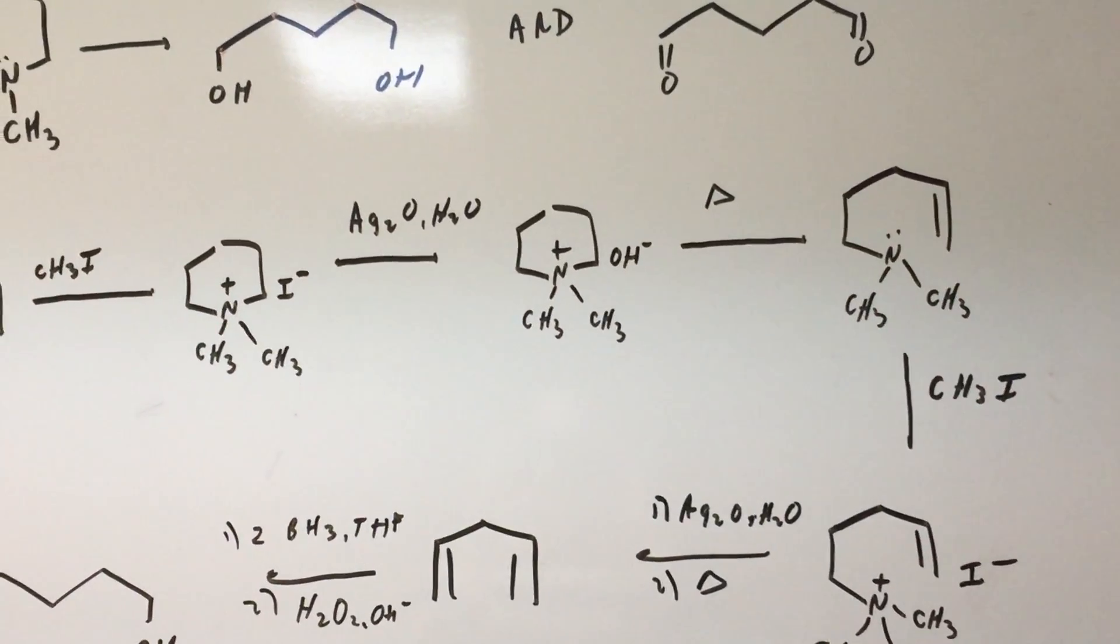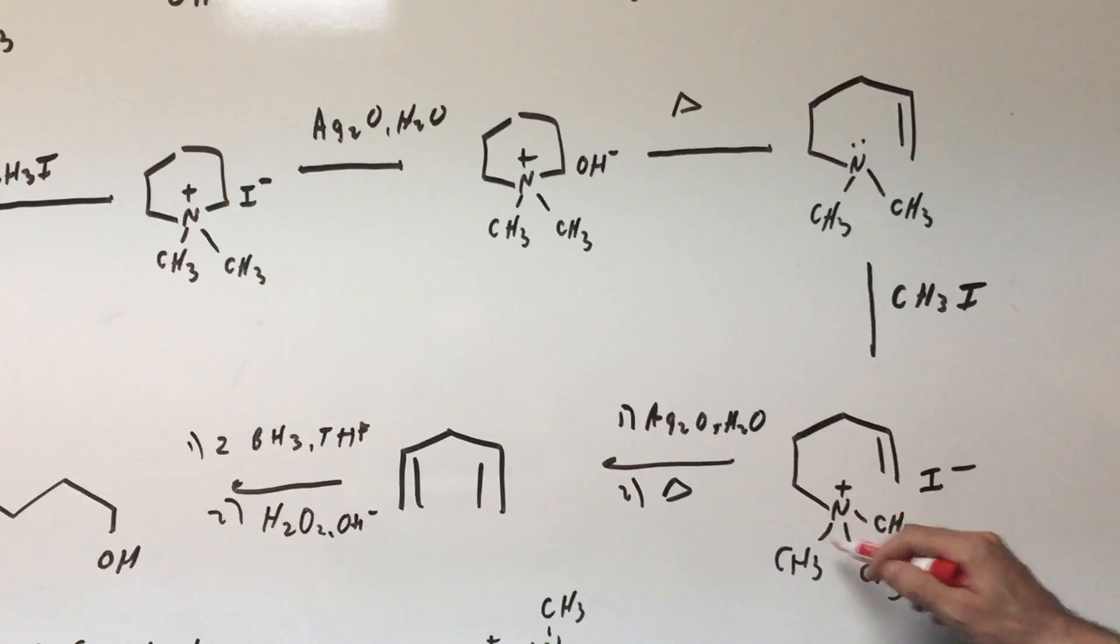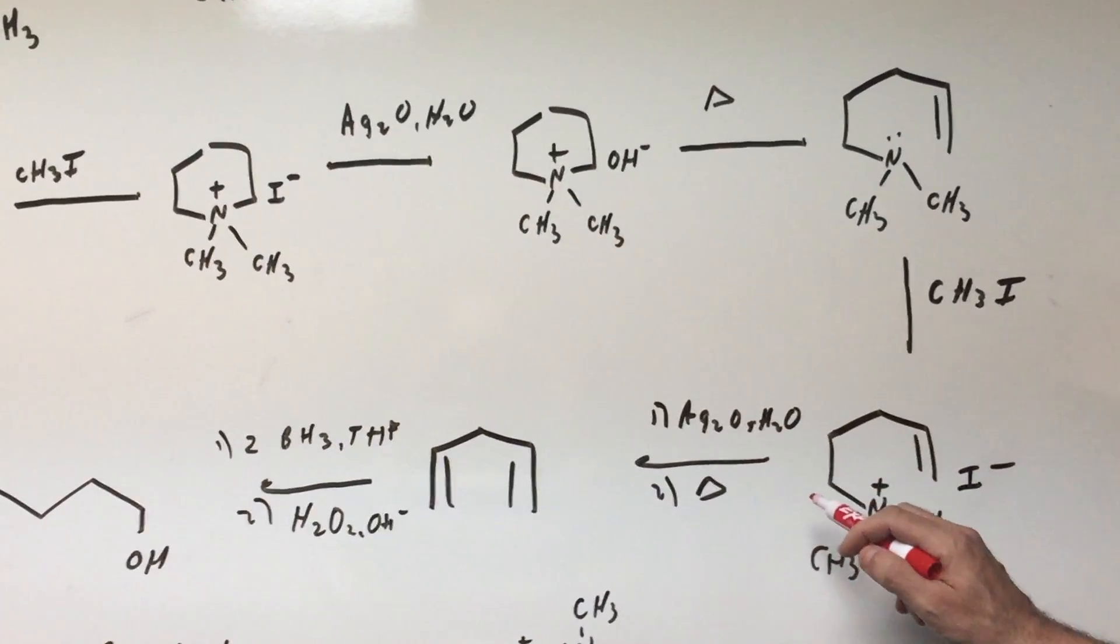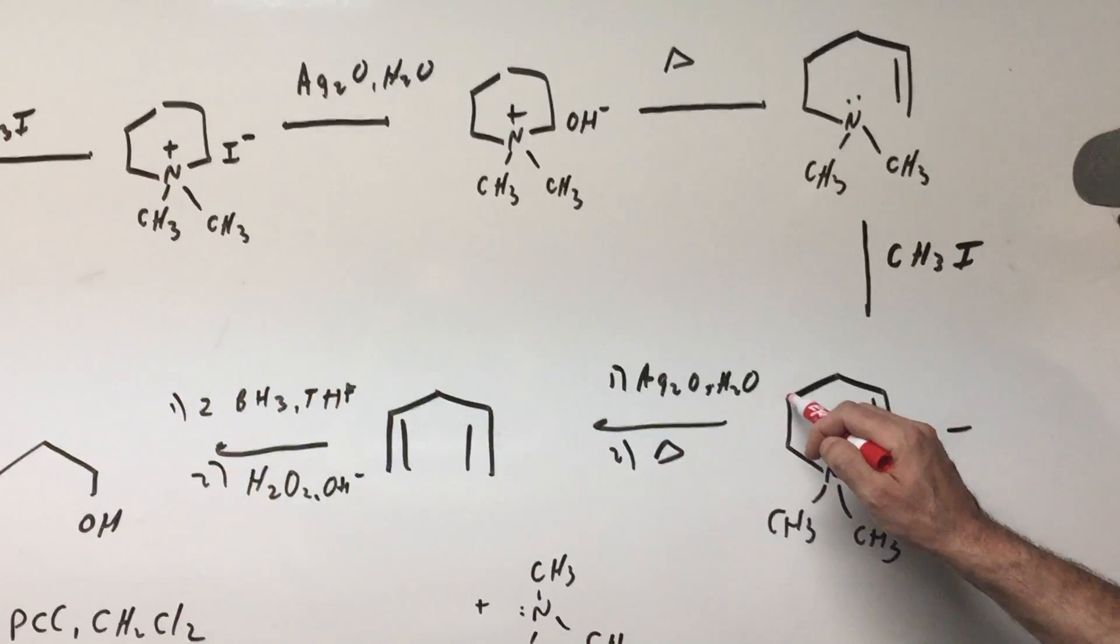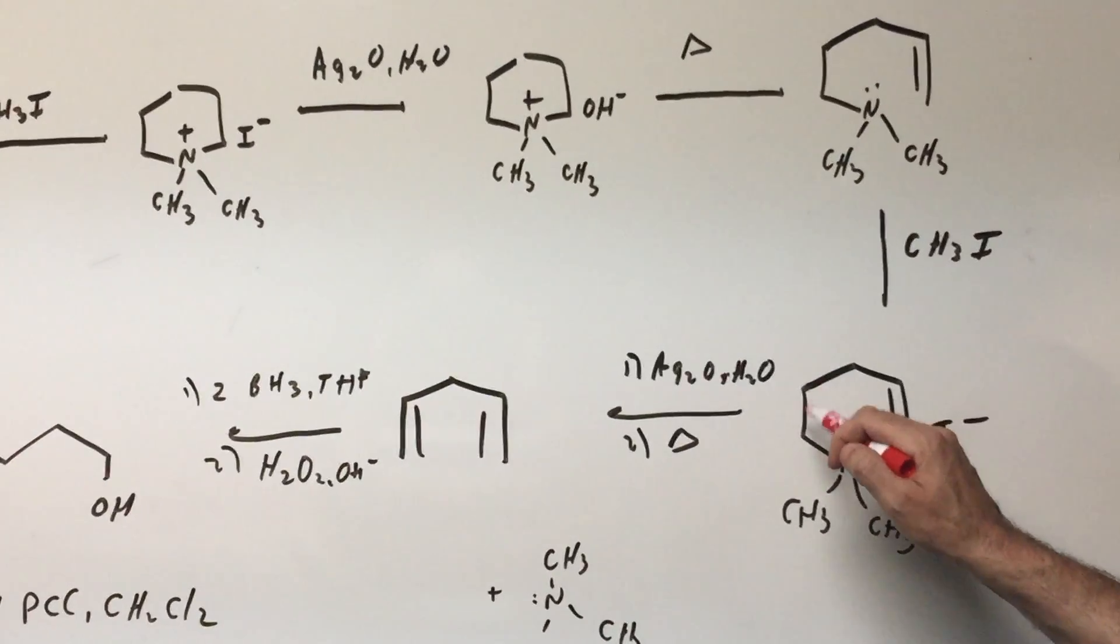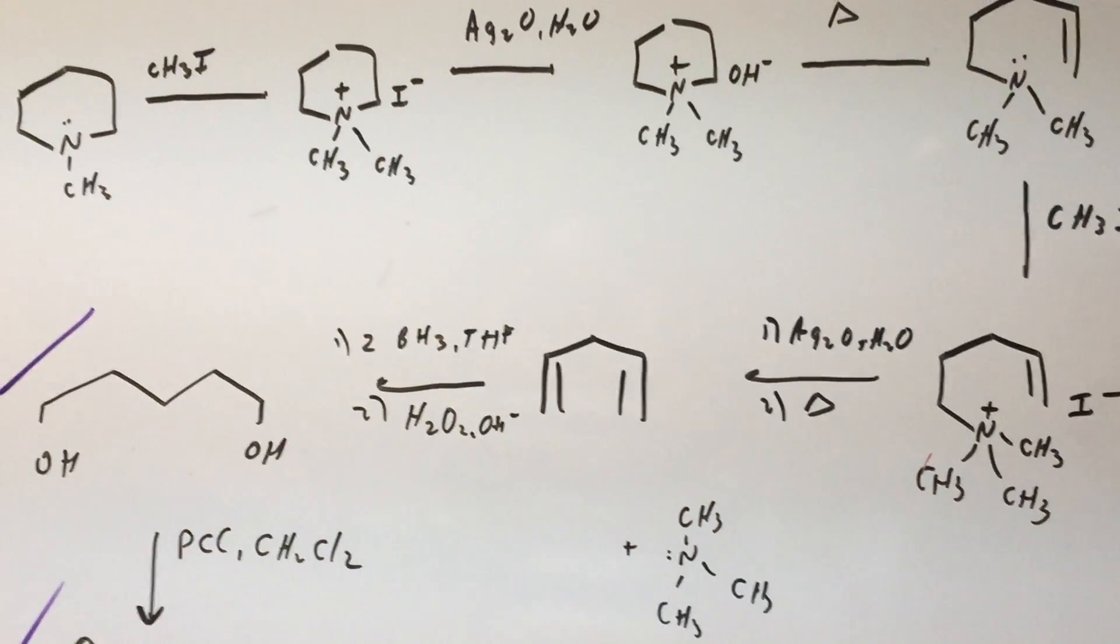Now let's methylate it once again. When I methylate it once again we get the ammonium salt. Again we're going to hit it with Ag2O and that replaces the I with an OH-, and then over here as you can see at the beta, we pull off the H, break off the amine, and we get the diene.